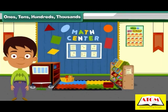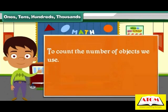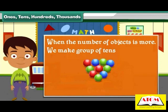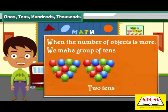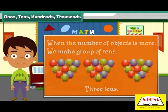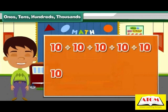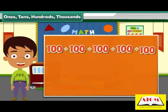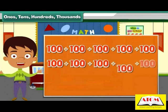Ones, tens, hundreds, thousands. To count the number of objects, we use ones. When the number of objects is more, we make groups of tens and count them as one-ten, two-tens, three-tens. What if there are lots of tens? We make a ten-tens group and call it hundreds. When we have ten hundreds, we call it a thousand.